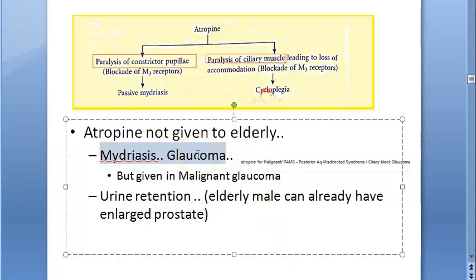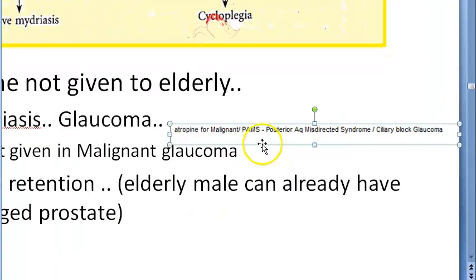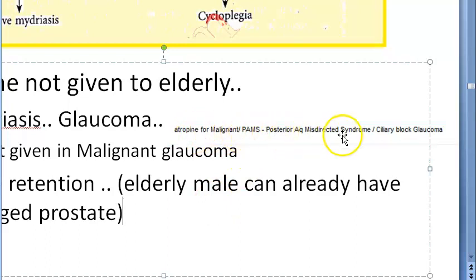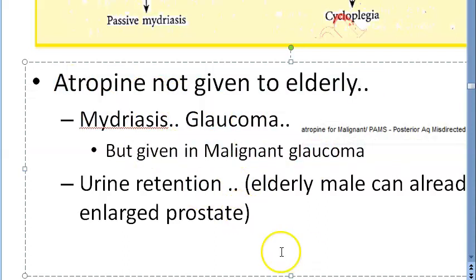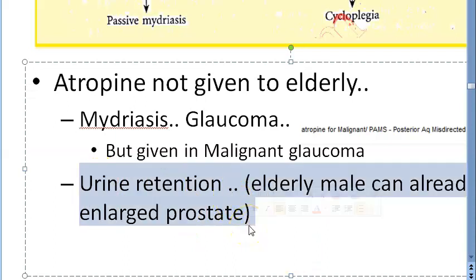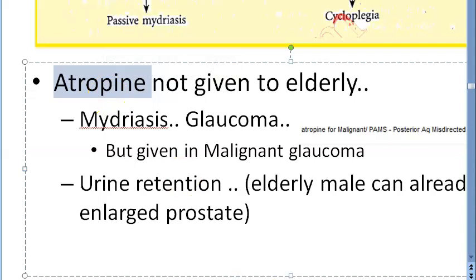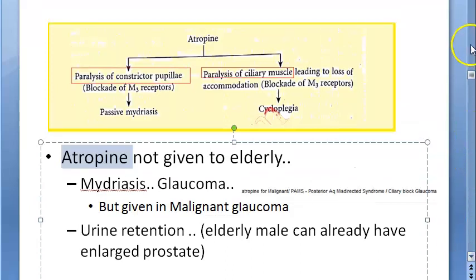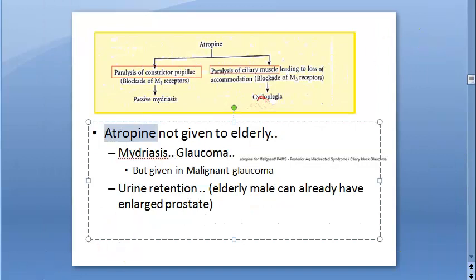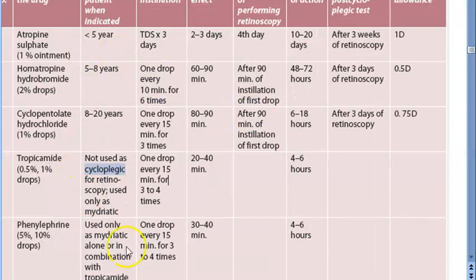Atropine is not given to elderly patients because it causes mydriasis and can increase intraocular pressure, worsening glaucoma. However, in malignant glaucoma — posterior aqueous misdirection syndrome, also called ciliary block glaucoma — atropine is used. Atropine is also not given to elderly men because they already have an enlarged prostate, and since atropine is anticholinergic, it blocks the parasympathetic system and prevents urination, causing urine retention.